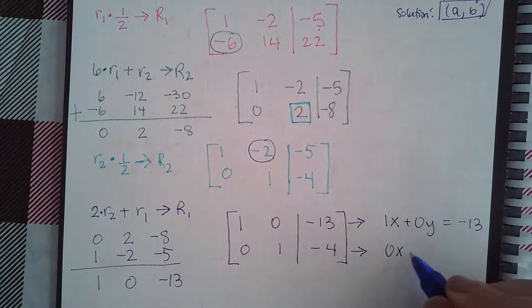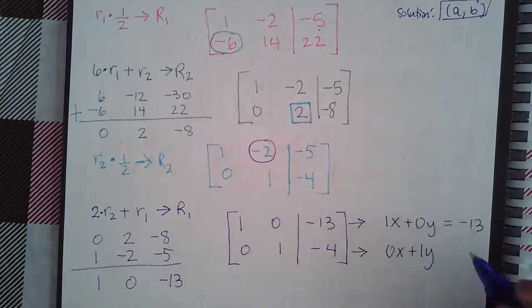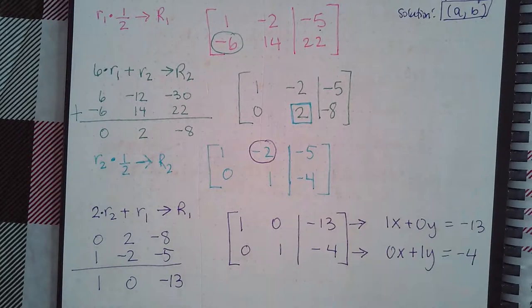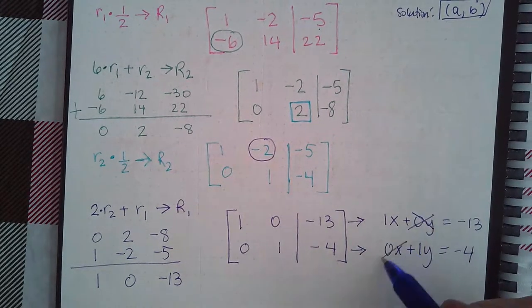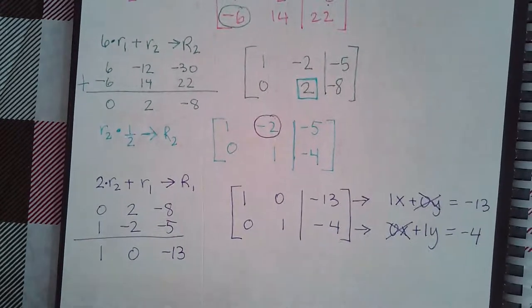Here, I have no x's plus positive 1y equals negative 4. How can you clean this up? Well, you don't have to write 0x and 0y if there's no x's and no y's.